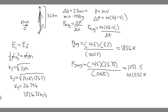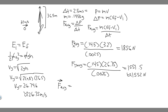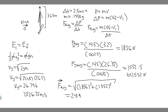Now we have the force in x and y, so we can find the resultant using the Pythagorean theorem — A² plus B² equals C². So F average equals the square root of 1,856² plus 1,552². Plugging that in gives F average equals approximately 2,419 newtons, which we can round to 2,400 newtons. That's the average force between the ball and the bat.